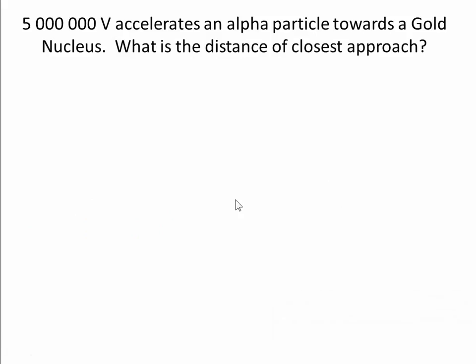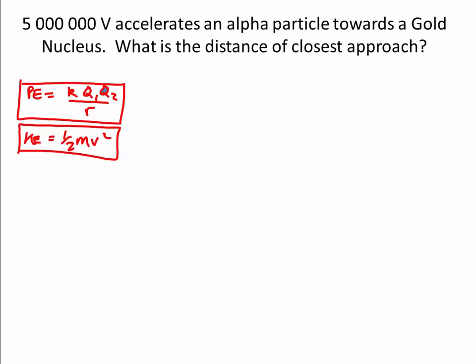Let's say we have 5 million volts which are used to accelerate the alpha particle towards the gold nucleus. These are the equations for the potential energy and kinetic energy. But we're interested in this one in particular.